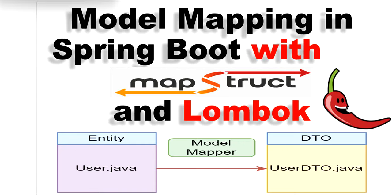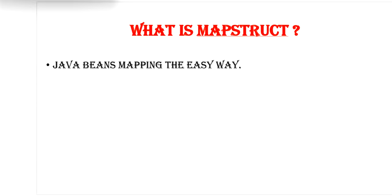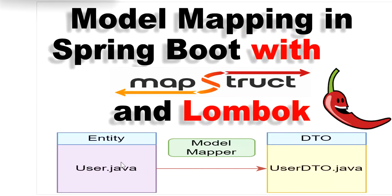Welcome to this channel to gain Java knowledge. Today in this video we are going to learn what is MapStruct and why we need to use MapStruct in our Spring Boot application. The main purpose of using MapStruct is to convert our beans into another bean type. Like if we want to convert our entity bean into DTO, then we can use MapStruct. MapStruct is a Java beans mapping easy way. It is a code generator that greatly simplifies the implementation of mapping between Java types, generating type-safe mapping code at compile time.